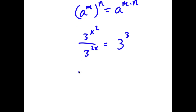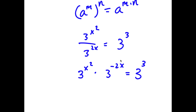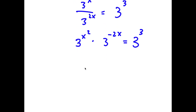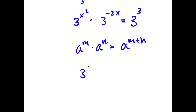I can rewrite this as 3 to the power of x squared times 3 to the power of negative 2x is equal to 3 to the power of 3. And since a to the power of m times a to the power of n equals a to the power of m plus n, this gives us 3 to the power of x squared minus 2x is equal to 3 to the power of 3.